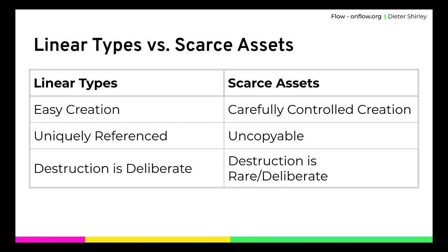Linear types make it easy for you to create them, but instead of making it easy to copy them or share references to them, linear types explicitly make them uniquely referenced. When you're done with a linear type, you have to be very explicit about its destruction or release. The difference between uniquely referenced and uncopyable is actually pretty subtle — the bookkeeping you have to do to ensure something is uniquely referenced and the bookkeeping to ensure it isn't accidentally copied is almost identical. Linear types have a very similar set of properties to what we want in scarce assets.